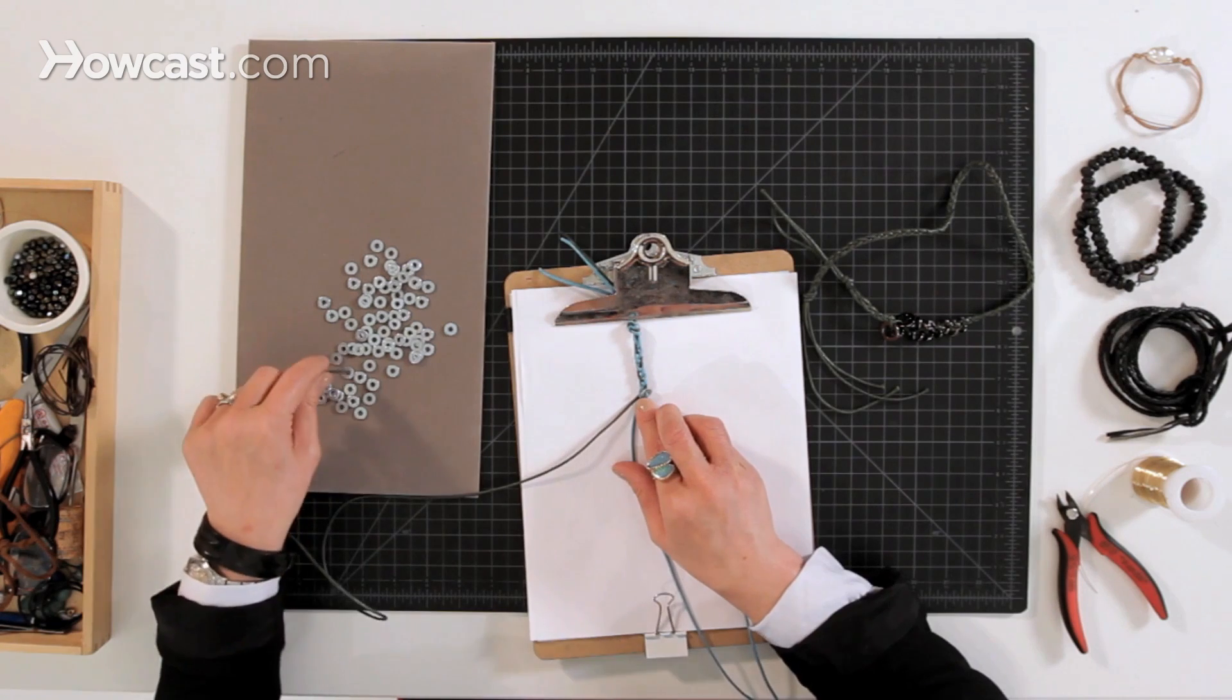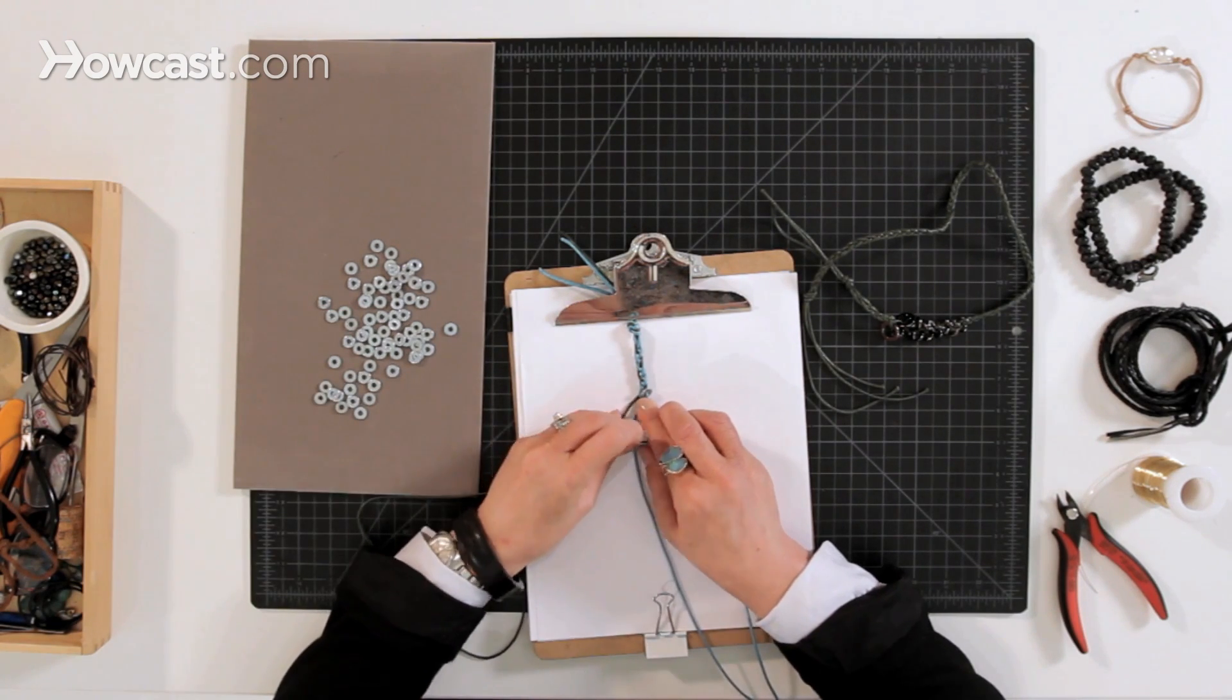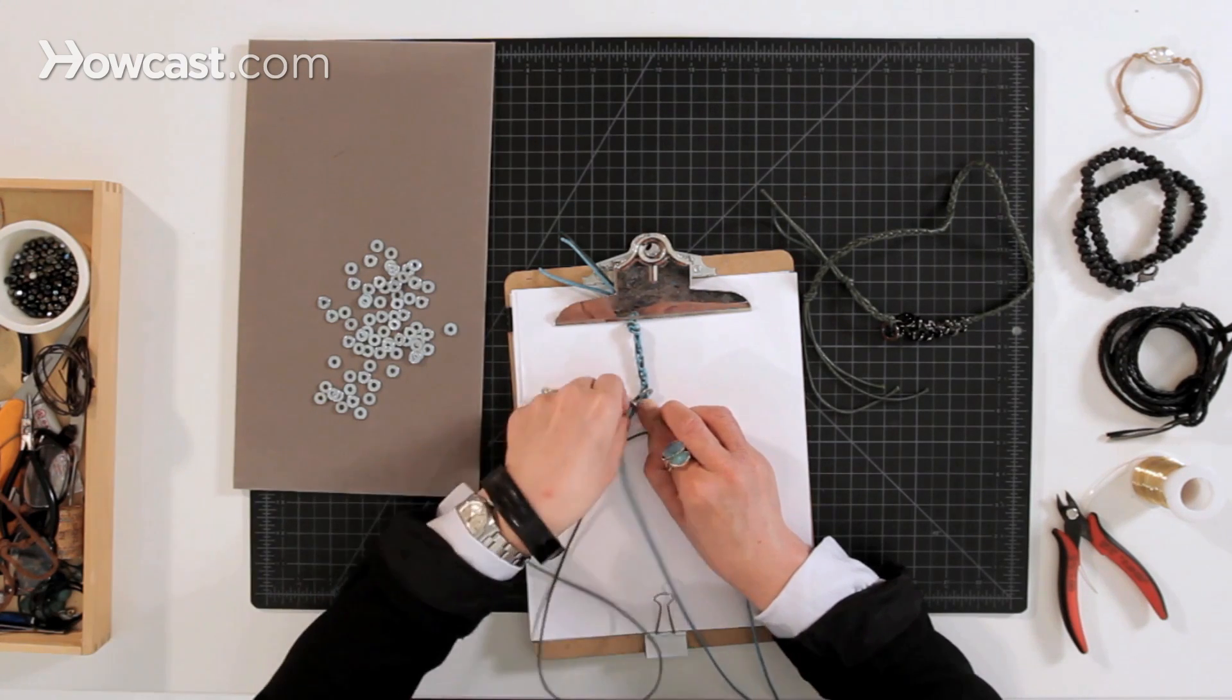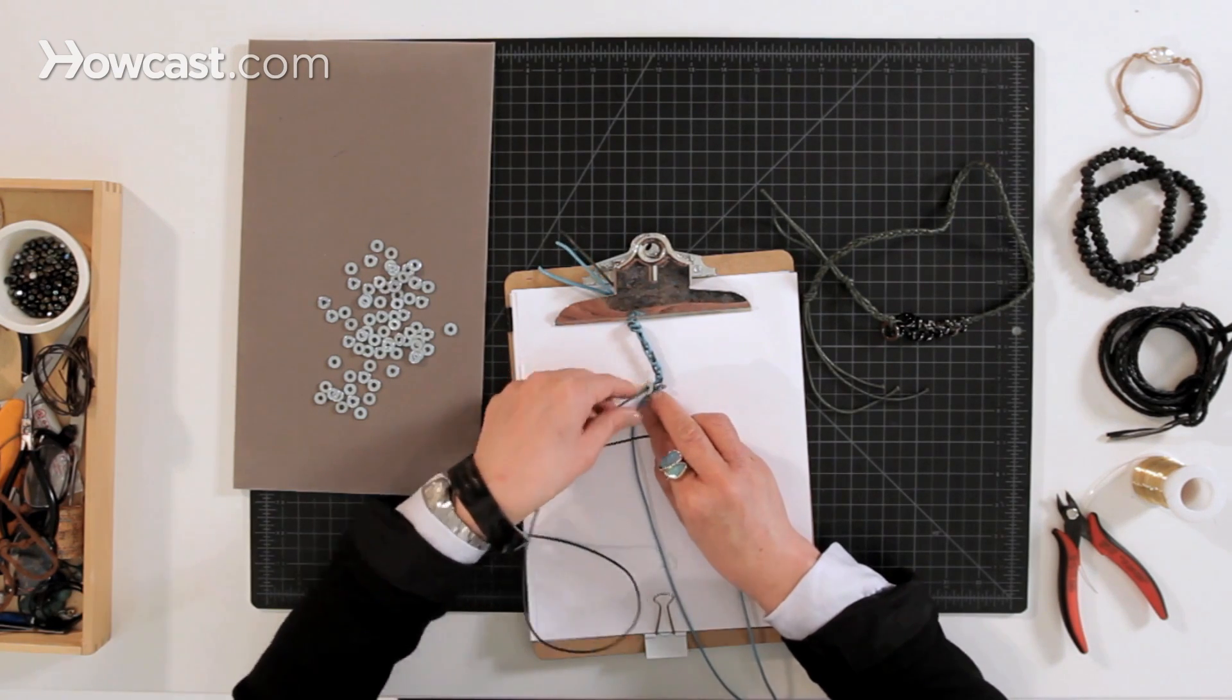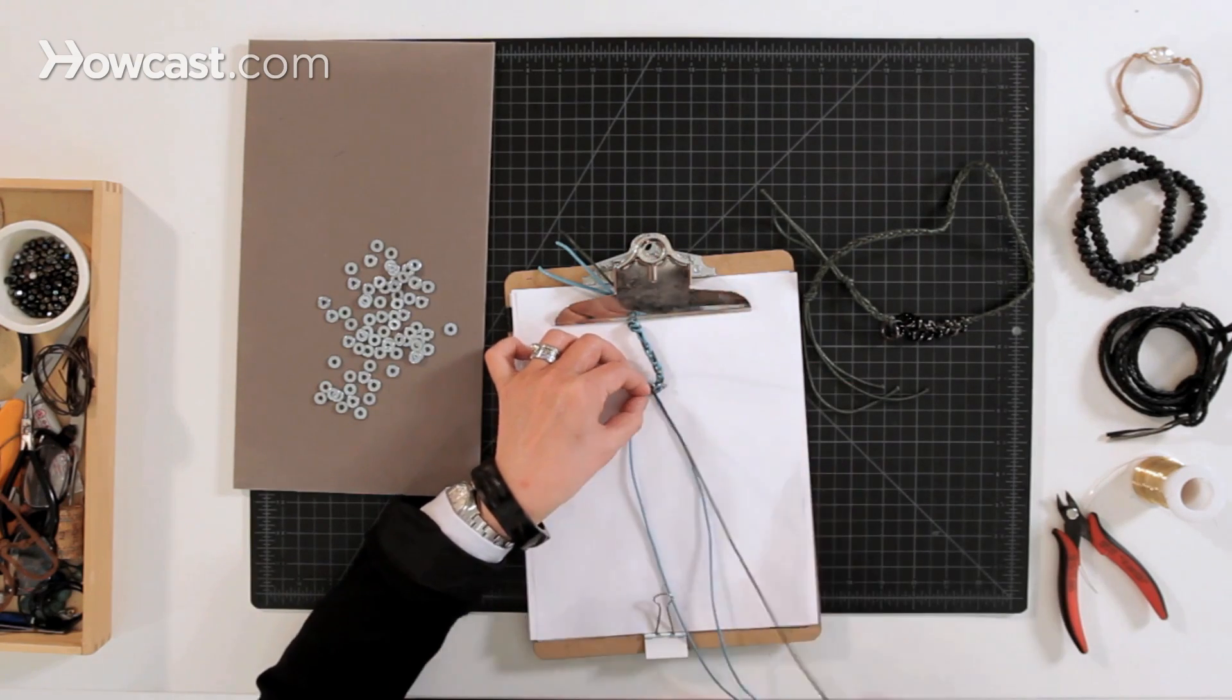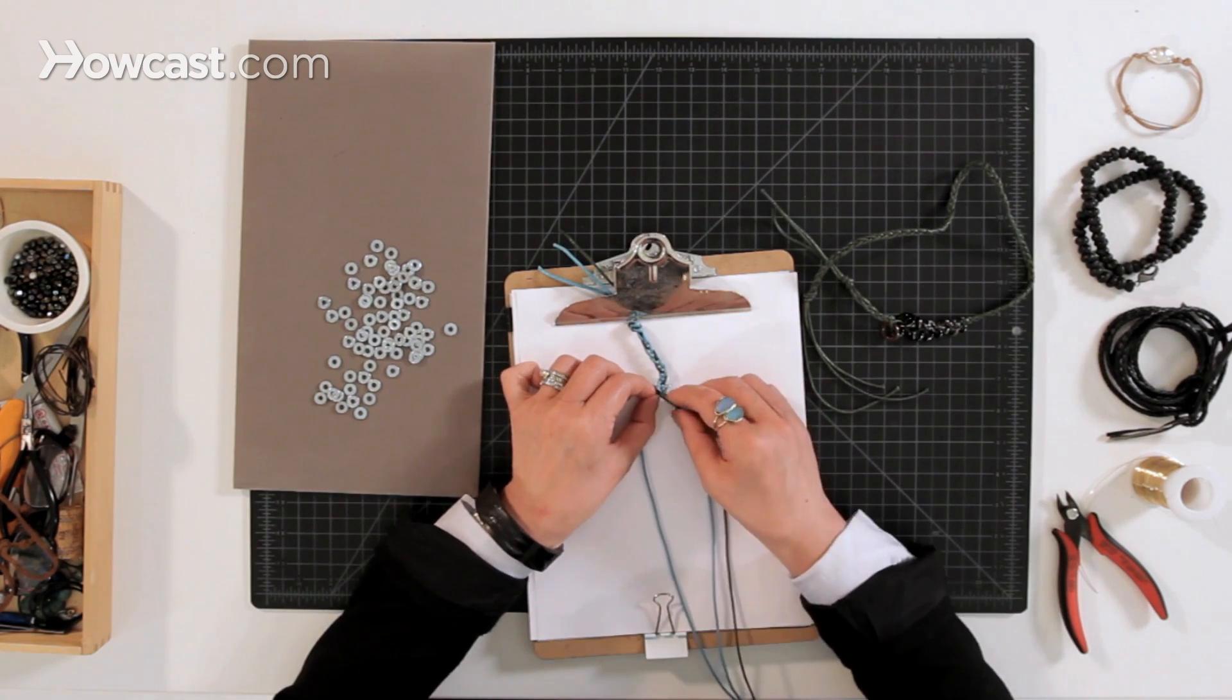Then I'm going to add a washer to the left side. So here's the tricky part. You want to make sure that they're all going in the same direction, the washers. And then I'm going to bring that to the middle. So you see how they're like this?